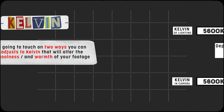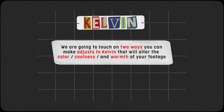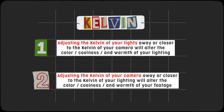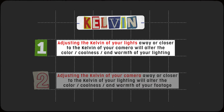There are a couple of ways you can use Kelvin to get the look you're going for. The first one deals with adjusting the Kelvin of your lighting away from the Kelvin set in camera. This is helpful when you are shooting a scene and you want your lighting to appear warmer or cooler.